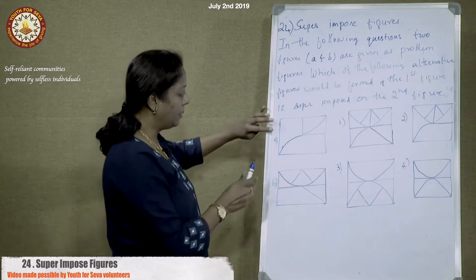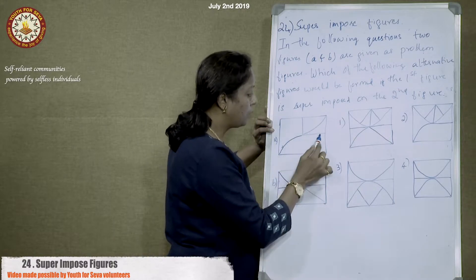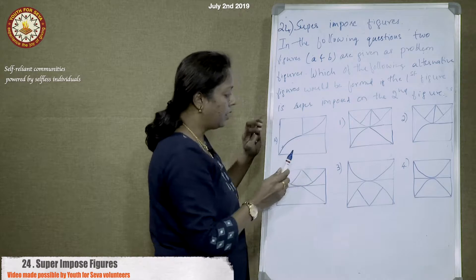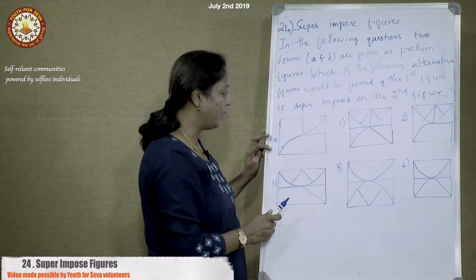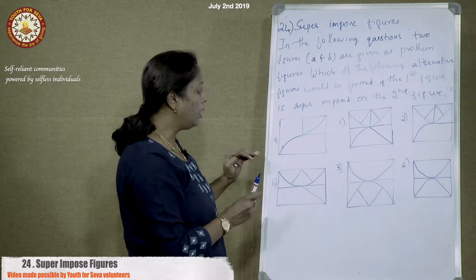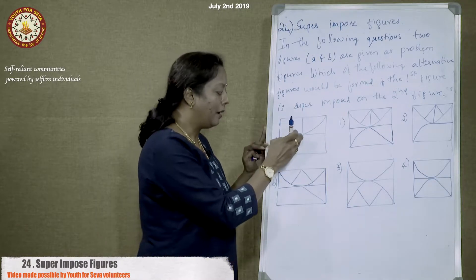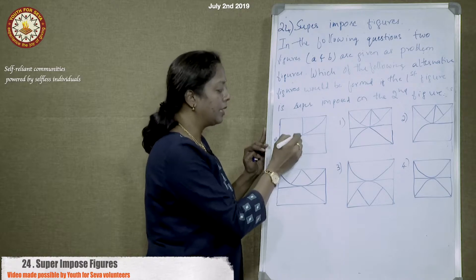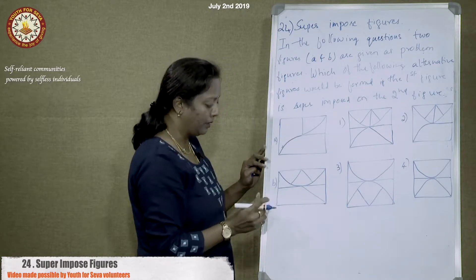Let us take a closer look at figure A. There is a curve, two straight lines, and a curvature. When solving these kinds of problems, take a good look at the position of the lines, whether each element is a curve or a straight line.